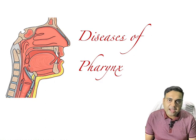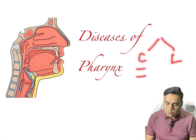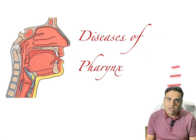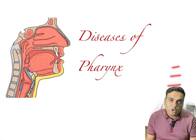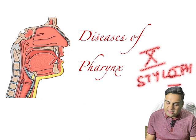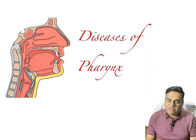Muscles of pharynx — two types: constrictors and longitudinal muscles. Three constrictors: superior, middle, inferior. Three longitudinal muscles: palatoglossus, styloglossus, salpingopharyngeus. All are supplied by the vagus nerve except the stylopharyngeus, which is supplied by the ninth nerve — the glossopharyngeal nerve.